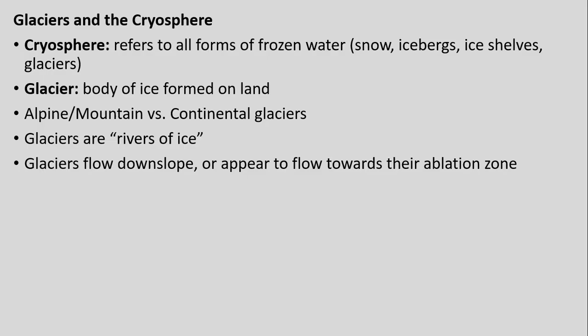We're talking about geomorphology and particularly with glaciers, we can refer to their components as all being under what we could call the cryosphere — referring to anything that's basically frozen water specifically. So snow, icebergs, ice shelves, glaciers — all these different terms we have to refer to essentially bodies of ice that are formed on land or extending out from land into oceans.